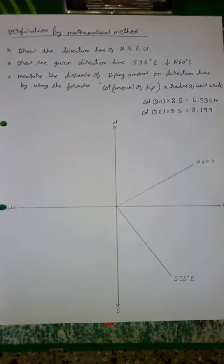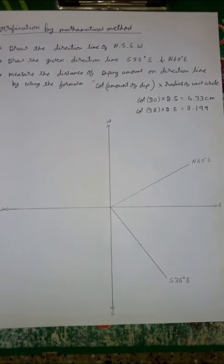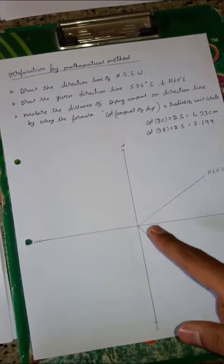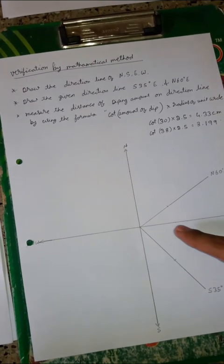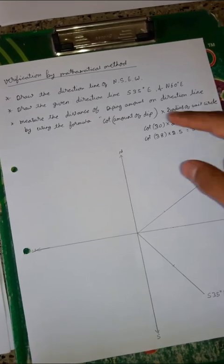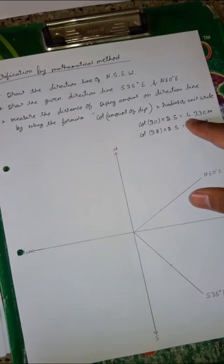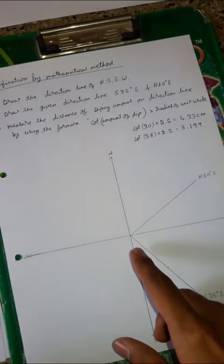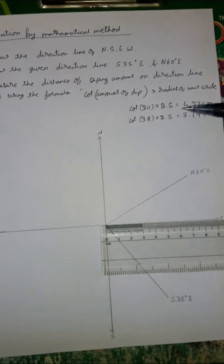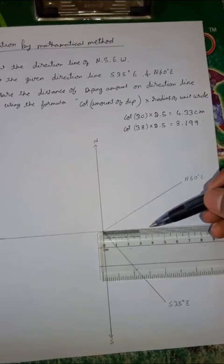We have completed this problem using the graphical method. Now we want to check whether we did it correctly using the mathematical method. In this method, first draw north-south and east-west lines and the direction lines — north 60 degrees east and south 35 degrees east. Then measure the distance using the formula: cotangent of the dip angle multiplied by the radius of the unit circle. Cot 30 times 2.5 equals 4.33 cm, and cot 38 times 2.5 equals approximately 3.2 cm.